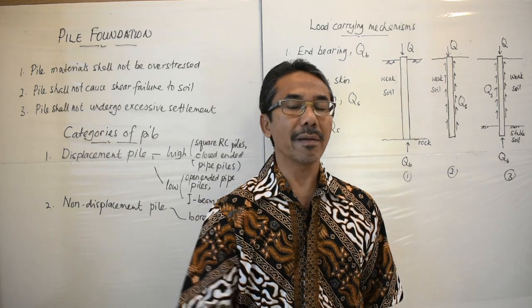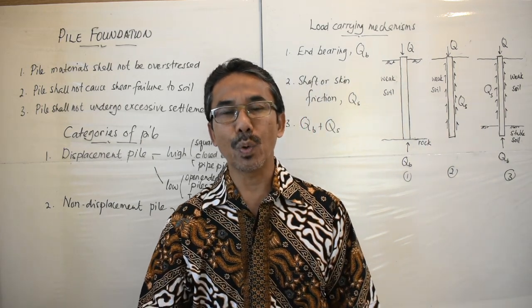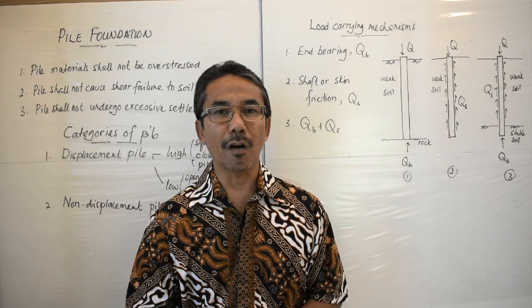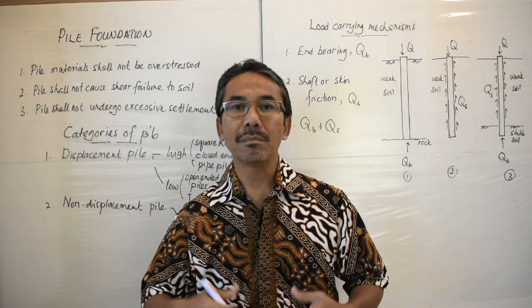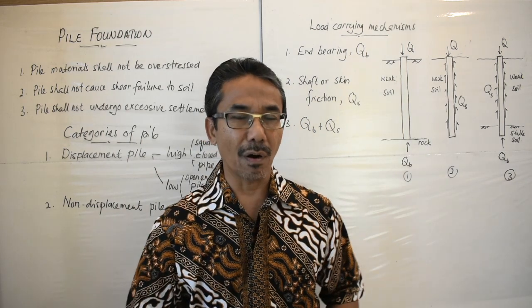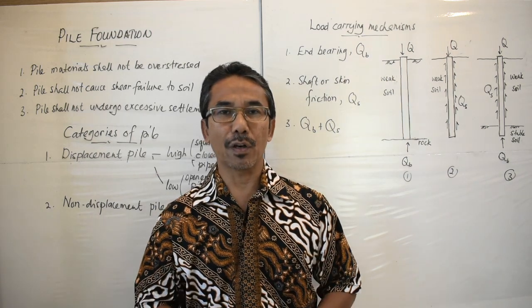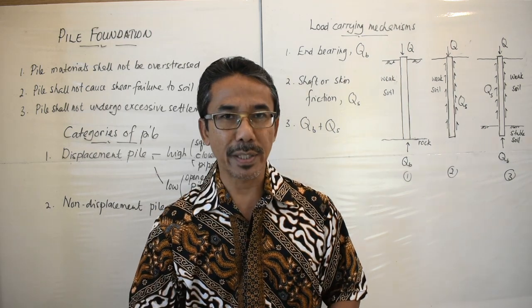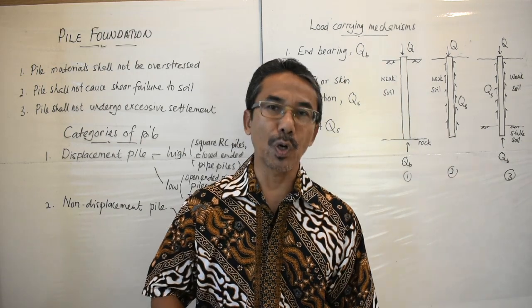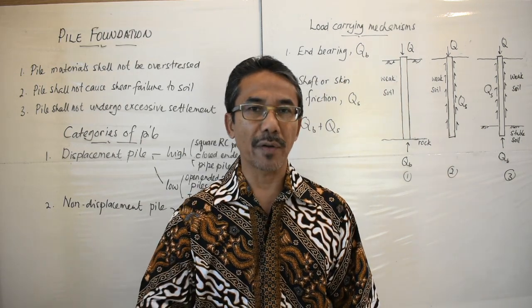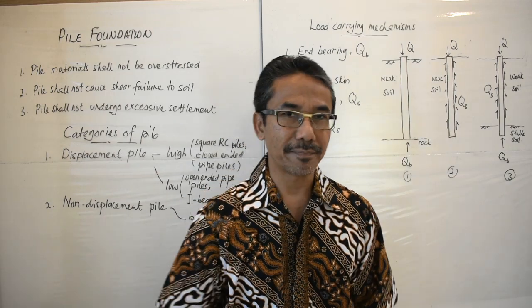The fourth reason for using pile is to maintain the stability of the foundation due to erosion or scouring. For example, the foundation of a bridge which tends to be prone to erosion or scouring by the flowing water in the river.